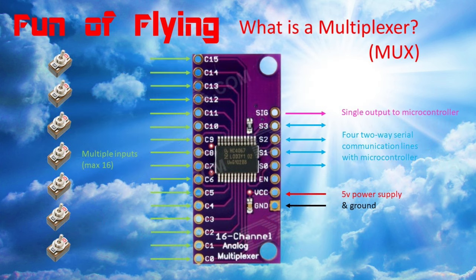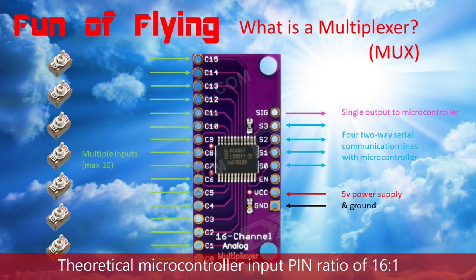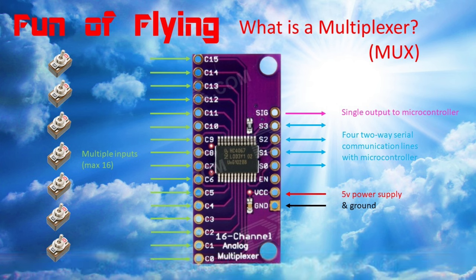So what is a multiplexer? In layman's terms, it's a small printed circuit board with an onboard processor that acts as a glorified switch — one that could have multiple inputs from up to 16 toggle switches coming in on one side and only one signal output leaving the other side. This signal output then goes back to one of the limited number of pins on the microcontroller itself, giving a theoretical input signal reduction ratio of about 16 to 1. When set up like this the device is referred to as a multiplexer, or mux.